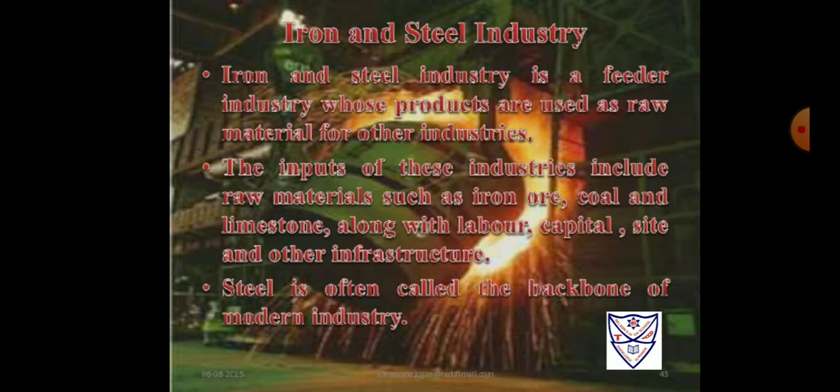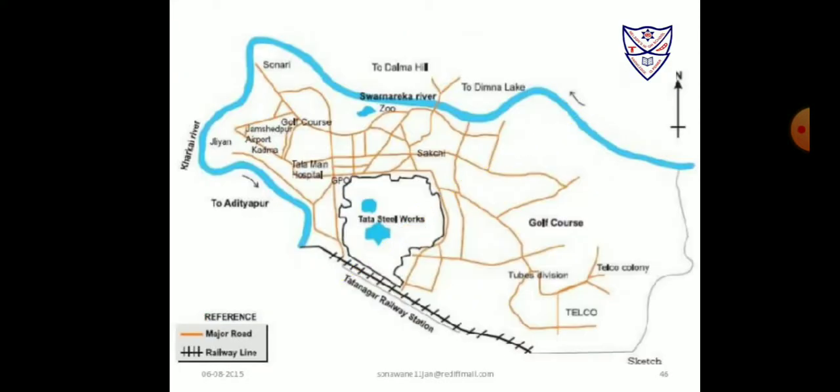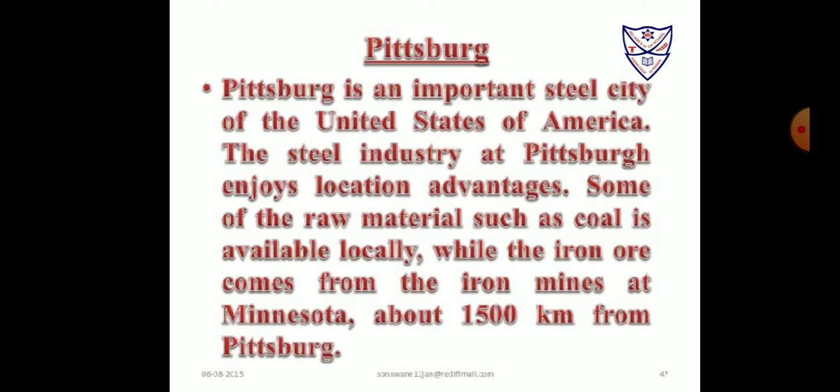Steel frameworks form the main part of a large number of buildings. Before 1800 AD, the iron and steel industry was largely located at places where manufacturers could easily get power supply, running water, and raw materials. After some time, coal fields were also chosen as ideal locations. Pittsburgh is an important steel city of the United States of America. The Pittsburgh area has many factories that use steel as raw material to make products such as heavy railroad equipment, heavy machinery, and rails.